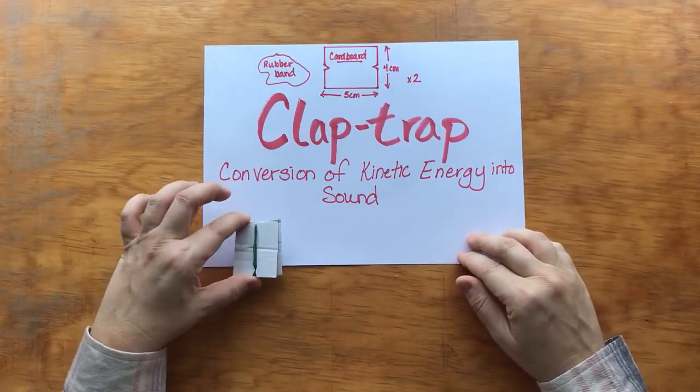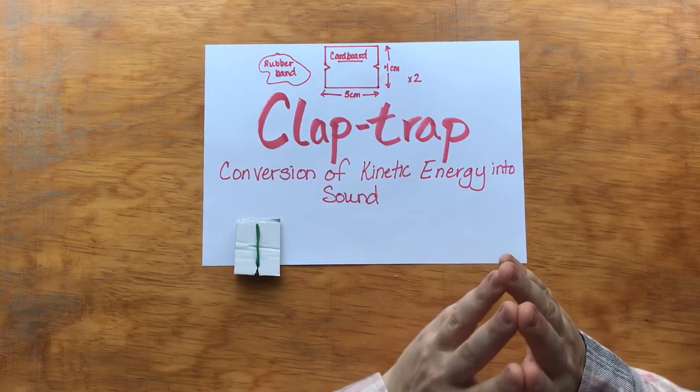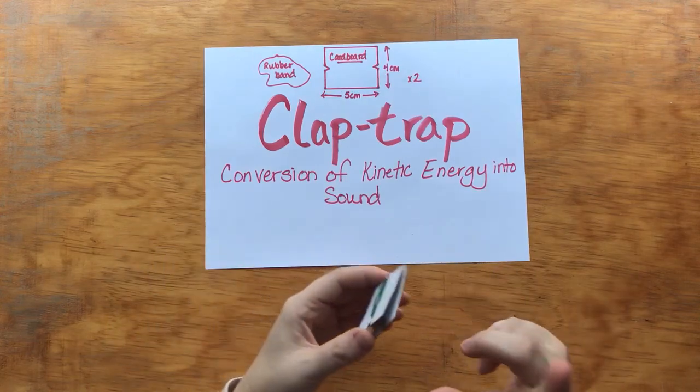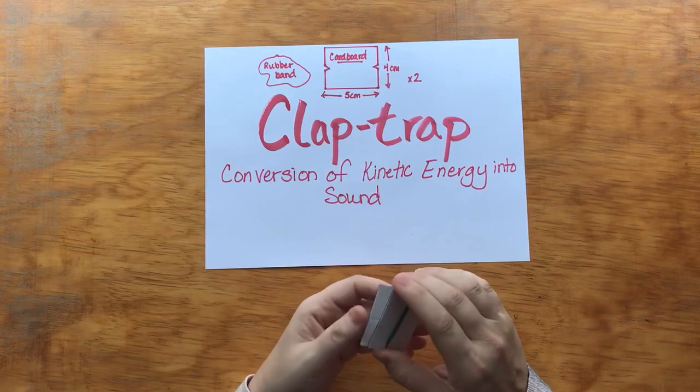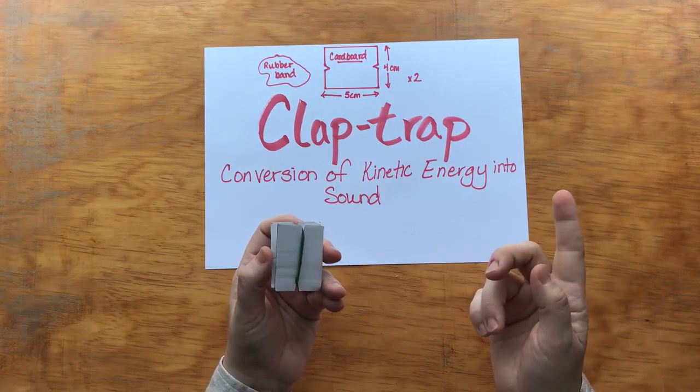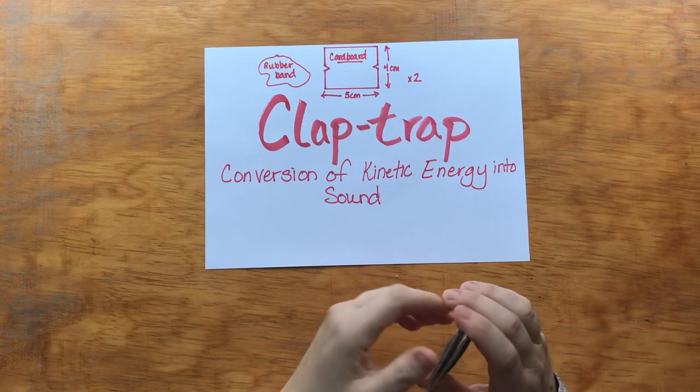So they can you can make them bigger if you feel you want to make them bigger but I think this size is okay. So really what's happening is it should be obvious that the sound that's coming from the device the clap trap is noise that's produced because the two pieces of cardboard are clapping against each other.